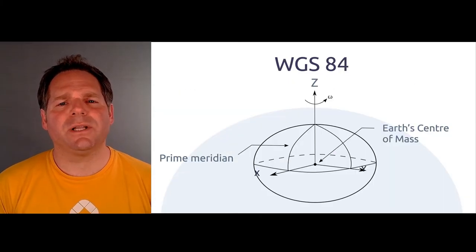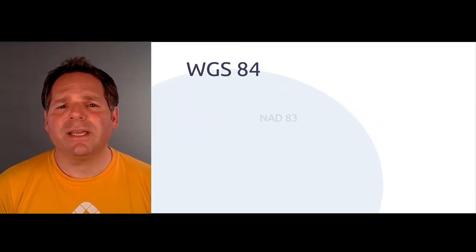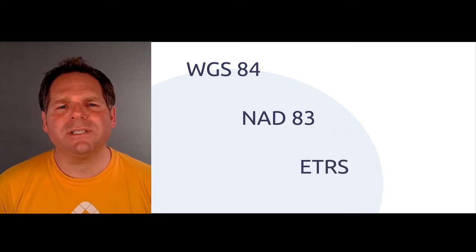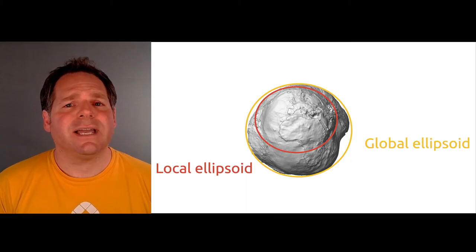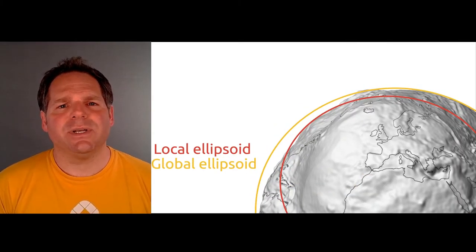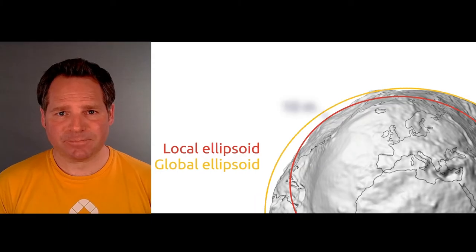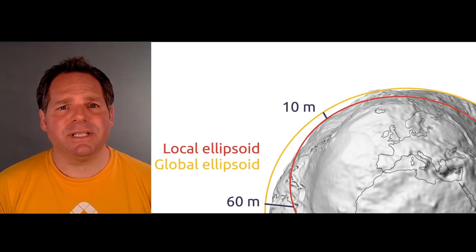The most commonly used global datum is called WGS-84. In North America there's also NAD-83, and for Europe ETRS, which more closely fit these areas. For smaller areas, like single states or cities, we use different ellipsoids that more closely match the surface of the Earth in that particular place. These ellipsoids allow us to have up to millimeter precision in both horizontal and vertical directions.